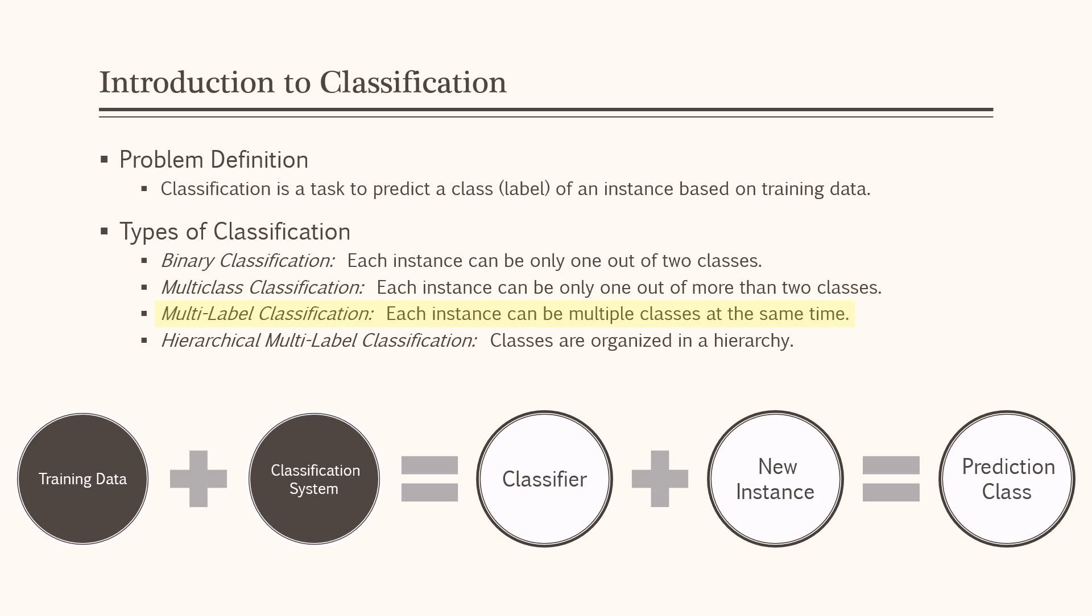In a more complex scenario, multi-label classification allows each instance to be multiple classes at the same time. Moreover, in hierarchical multi-label classification, classes are organized in hierarchical structure, which can be a tree or directed acyclic graph.